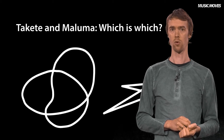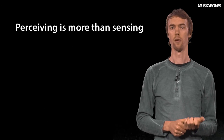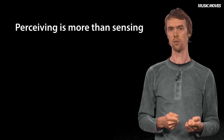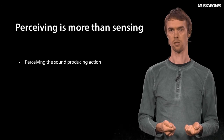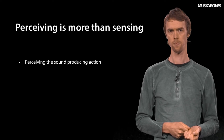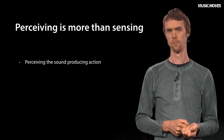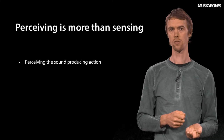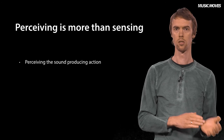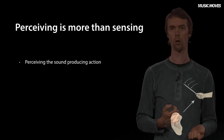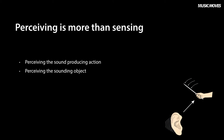To sum up what we have learned in this video: sound perception is more than sensing vibrations in air pressure. When perceiving a sound, we associate the sound with some sound-producing action — for instance, impulsive sounds are associated with some impulsive action, a fast transfer of energy from one object to another. We also make up our mind about the sounding object: its size, shape, material, location, and so forth.